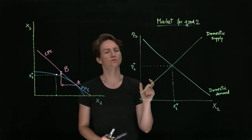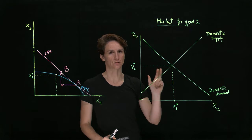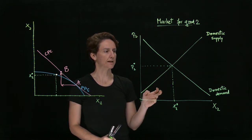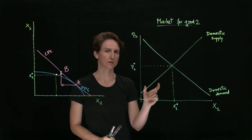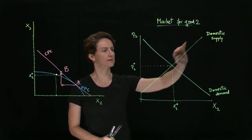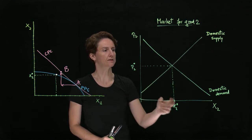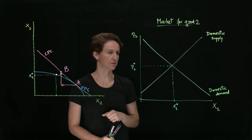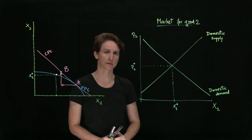Let's think about how we might show trade in our usual supply and demand graph. Suppose that we're looking at the market for good 2 internally, and we have domestic demand and domestic supply, which lead, without any trade, to an equilibrium of price P2 star and quantity consumed X2 star.